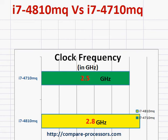Let's compare Intel's Core i7-4810MQ with the i7-4710MQ. Both are Intel's high-end notebook processors, kind of desktop replacements. Both are quad-core processors with Hyper-Threading enabled, so especially in cases where the processors can make use of all four cores simultaneously, the performance is very good.